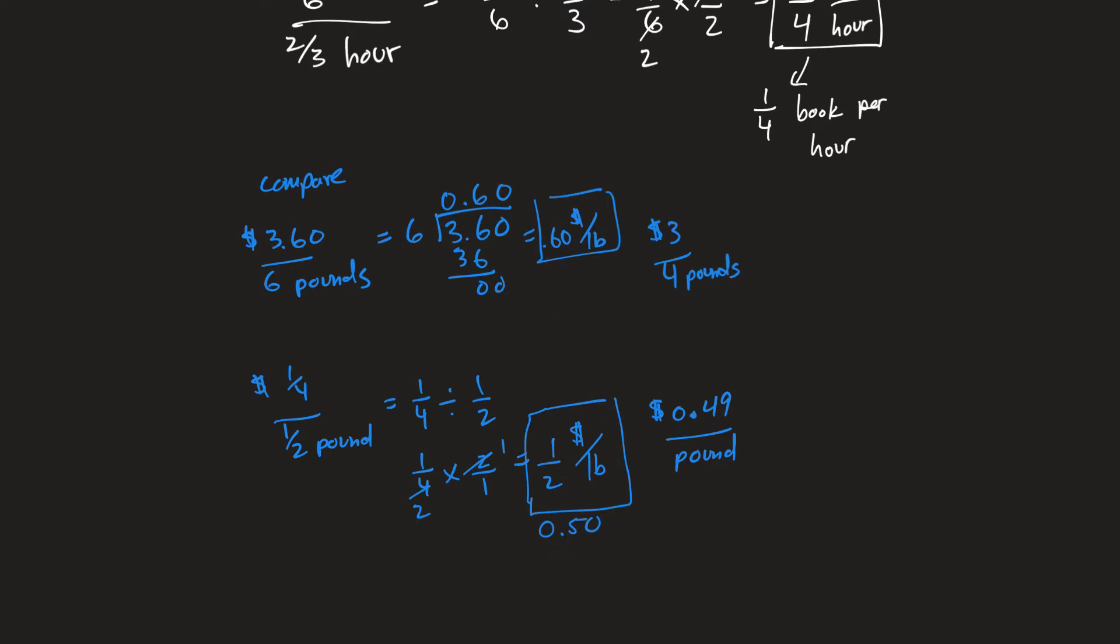Now, this one. Three dollars for four pounds. That would be four into three point zero. Four doesn't go into three, but it goes into thirty seven times, which is twenty-eight. And that is two. Bring down another zero. Four goes into twenty five times. So that is seventy-five cents per pound.